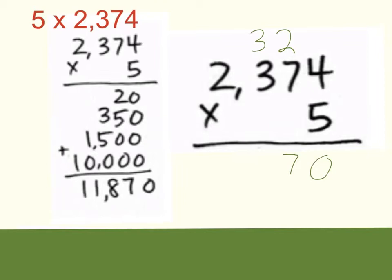Next we multiply 5 times 3, which is 15, plus 3, which gives me 18. Put your 8 in your hundreds place and carry your 1 to your thousands place. Finally, we multiply 5 times 2, which is 10, then add 1, which gives me 11. Put your 1 in your thousands place and your other 1 in your ten thousands place. Our final product is 11,870.